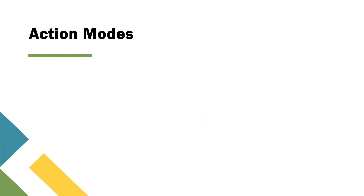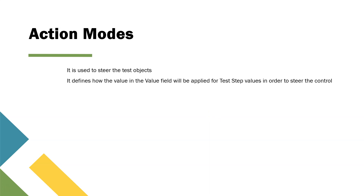Welcome again to this lesson in the Tosca automation course. Today we are going to talk about action modes in Tosca. Although in some previous sessions I have already used some of the action modes like input, constraint, and wait on, we'll talk about all of these action modes in more detail and look at some examples. Action mode is used to steer your test objects inside your test cases. It also defines how the value in the value field of your test case will be applied for the test step values in order to steer your controls.